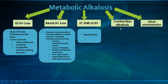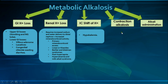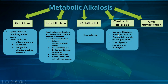Contraction alkalosis involves losing large amounts of low-bicarbonate fluid, resulting in a higher concentration of available bicarbonate in the plasma. Causes include loop or thiazide diuretics, sweat losses in cystic fibrosis, congenital chloride-wasting diarrhea, or loss of gastric secretions in achlorhydria.